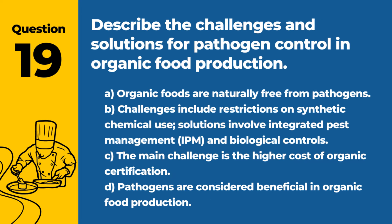Question 19. Describe the challenges and solutions for pathogen control in organic food production. a. Organic foods are naturally free from pathogens. b. Challenges include restrictions on synthetic chemical use. Solutions involve integrated pest management (IPM) and biological controls. c. The main challenge is the higher cost of organic certification. d. Pathogens are considered beneficial in organic food production. Answer: b. Challenges include restrictions on synthetic chemical use; solutions involve integrated pest management (IPM) and biological controls. Organic production requires alternative strategies for pathogen control to meet both safety and organic standards.